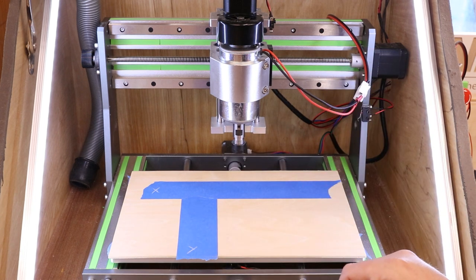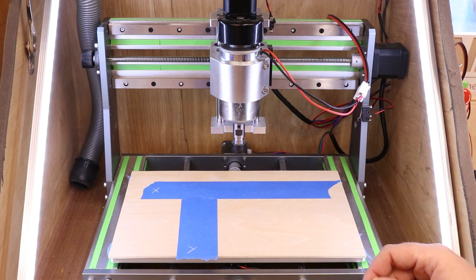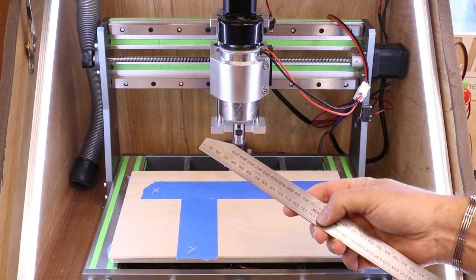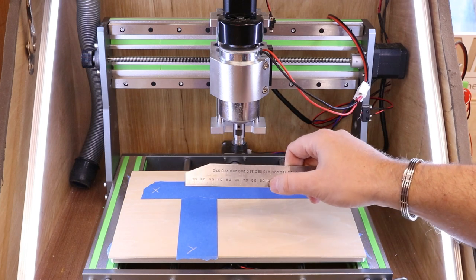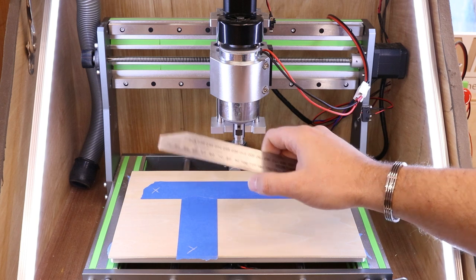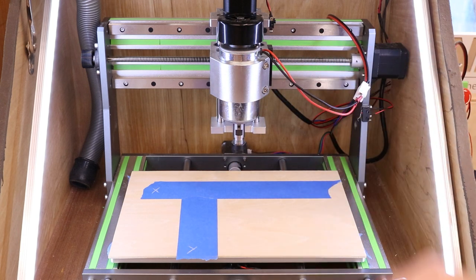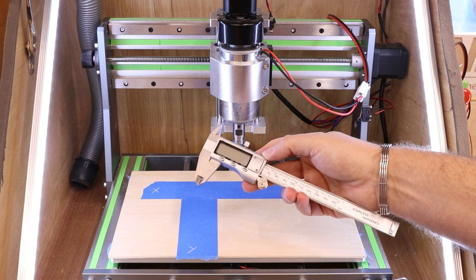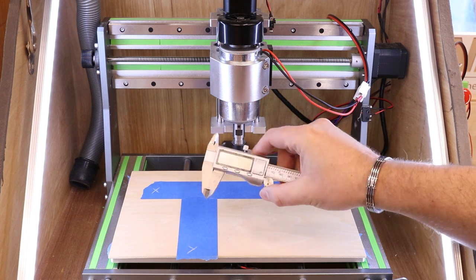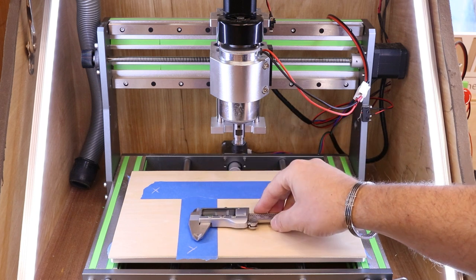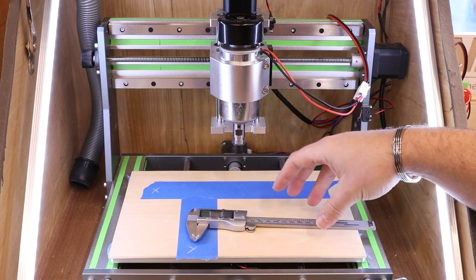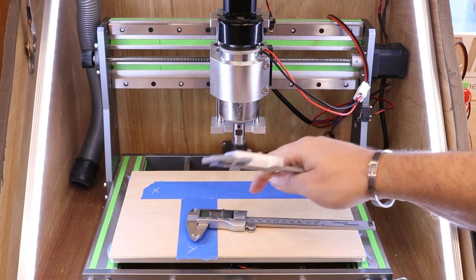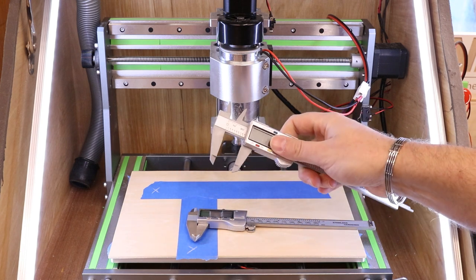When it comes to actually taking the measurements, the more accurate that you can be, the better results you're going to get. If you only have something like a ruler, your accuracy is going to be quite limited. These will measure in millimeters, maybe half a millimeter at best, but you really want something more accurate. What I'm going to be using is a set of calipers. These are stainless steel calipers off Amazon.